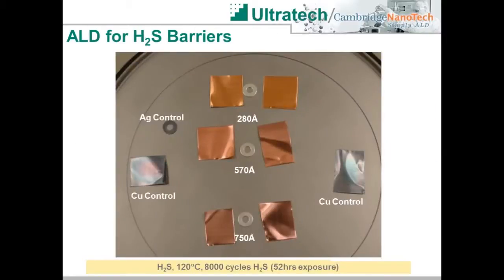Barriers for H2S are also desirable, particularly for collectible or decorative items made from copper or silver, which tend to react and discolor when exposed to atmospheric H2S. In our lab, we looked at depositing thin films of aluminum oxide on copper and silver samples with a range of aluminum oxide thicknesses, plus some uncoated control samples. These samples were then exposed to hydrogen sulfide for 52 hours while being heated to 120 degrees Celsius. The ALD-coated samples were not affected by the H2S, retaining their color, while the uncoated samples were impacted significantly as the hydrogen sulfide reacted strongly with the unprotected metal surfaces.